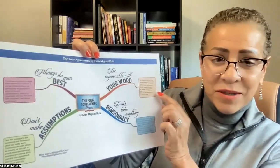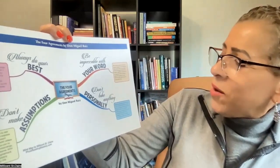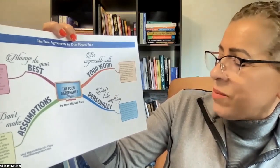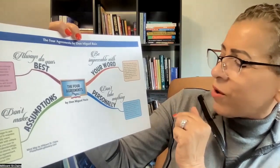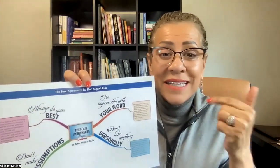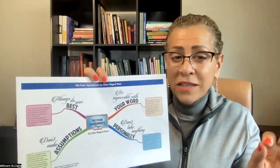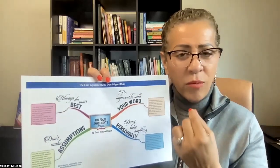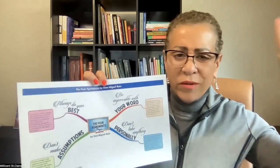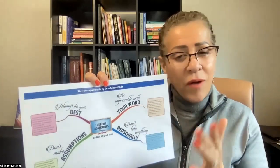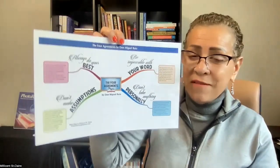Be impeccable with your word — this one's important. He says: speak with integrity, say only what you mean, and avoid using the word to speak against yourself or to gossip about others. Use the power of your word in the direction of truth and love. In the book he goes on to say that when we gossip, that's akin to practicing black magic. So we must learn to be impeccable with our word and stay away from negative conversations. We can go deep and wide with this, but that's an overview of the book.